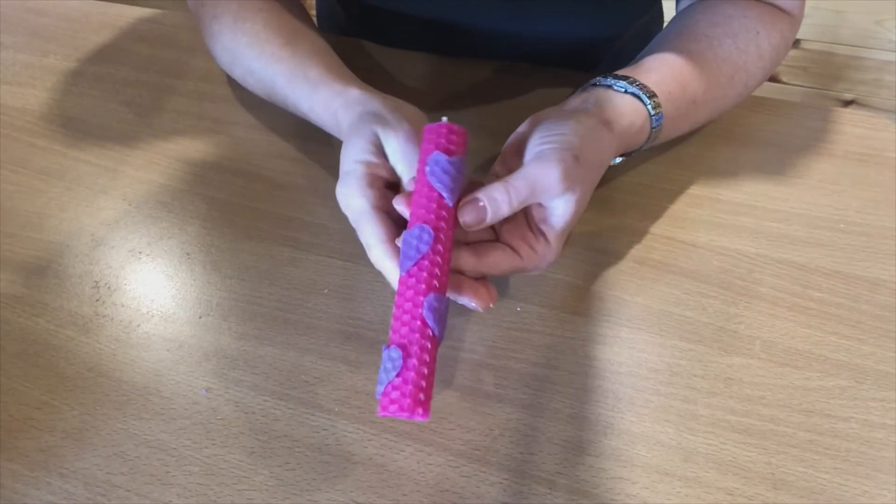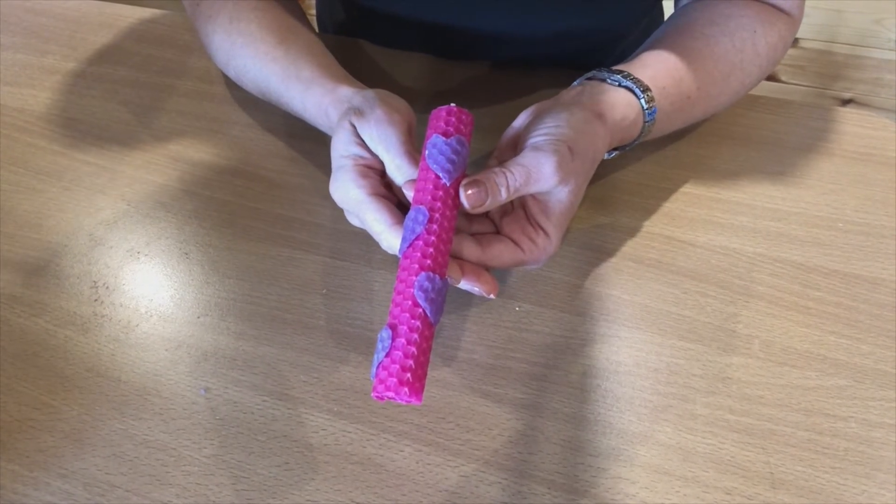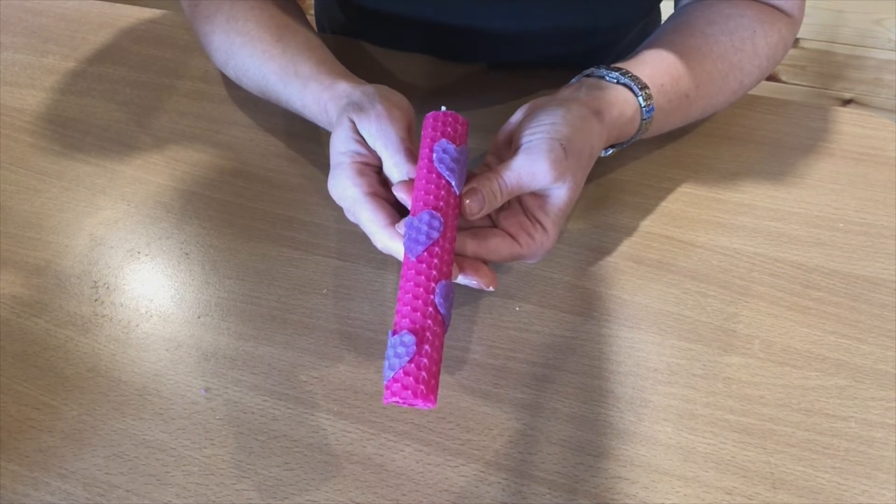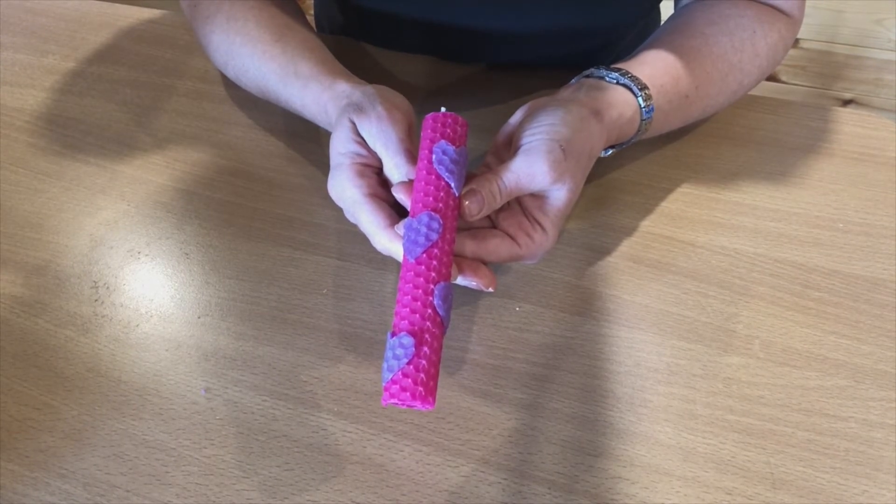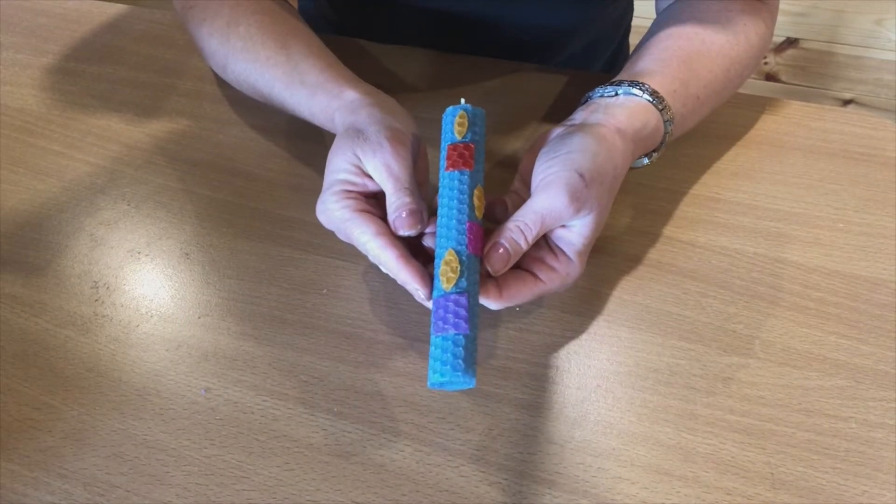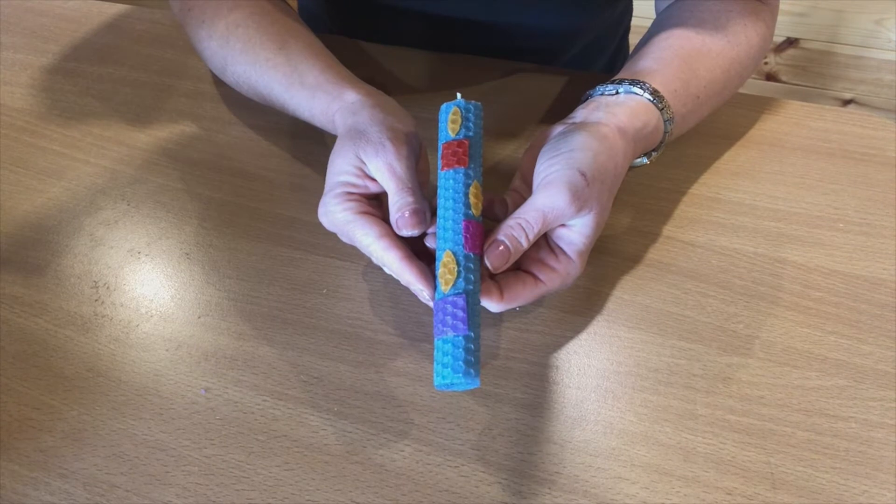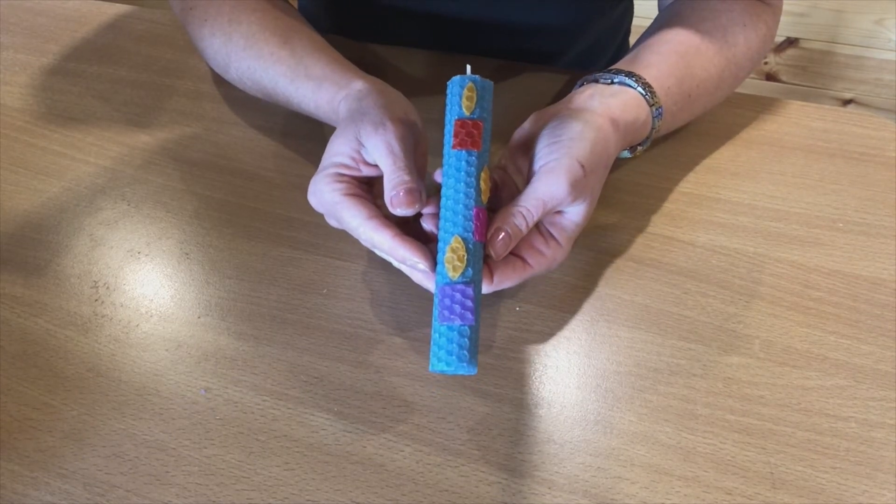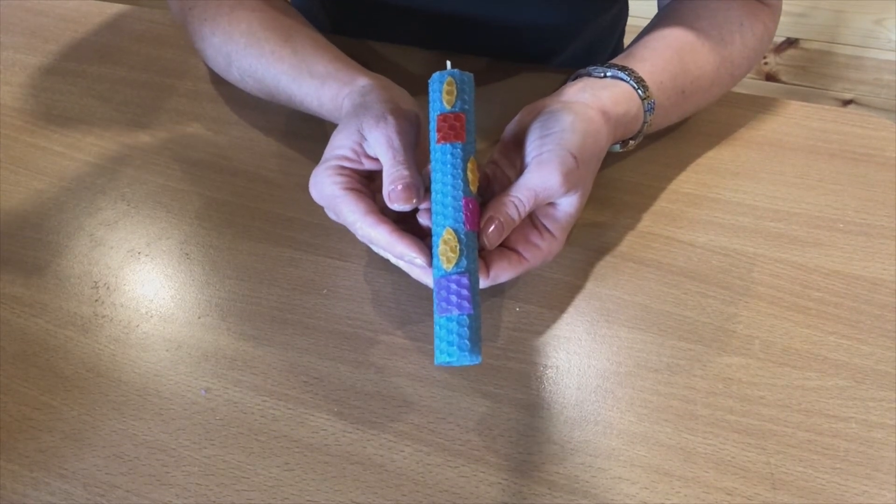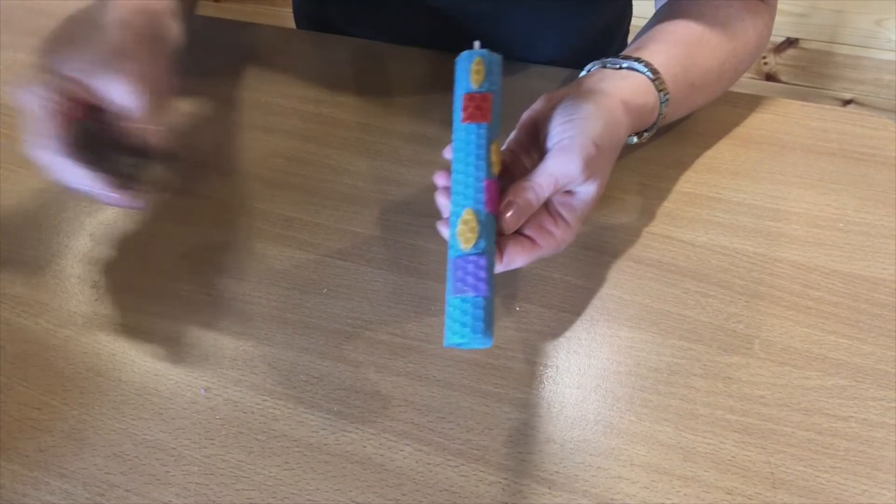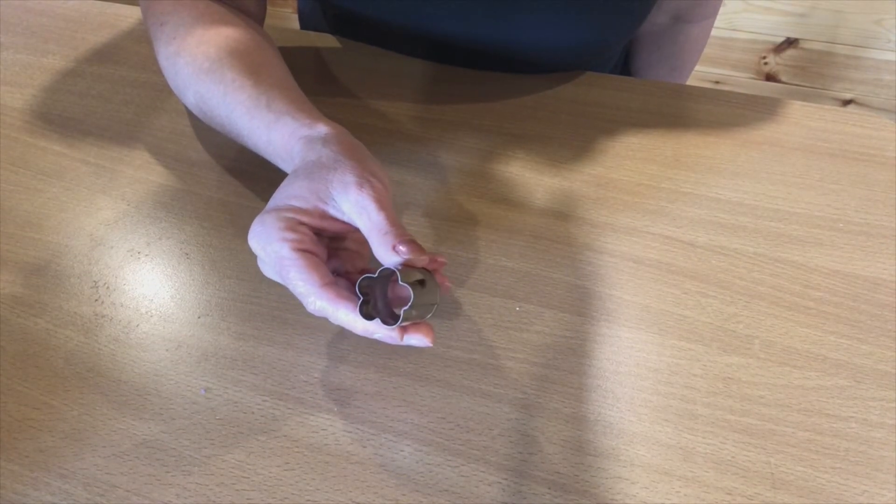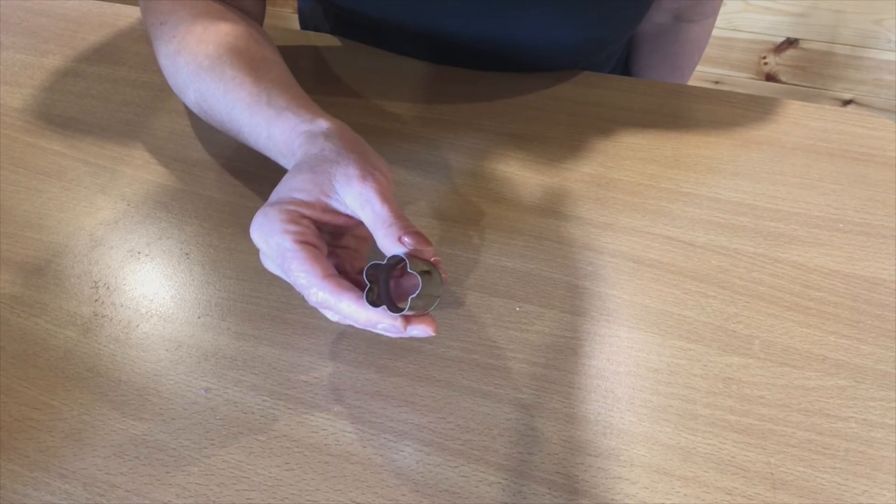There are other shapes on the template to choose from: butterflies, flowers, stars and moons. You can go freehand and cut out your own shapes. Here is an example of one of the candles I've made freehand with candles on a candle. You can also use sugarcraft cutters like this if you have any in the kitchen cupboard and press these down to cut out various shapes.